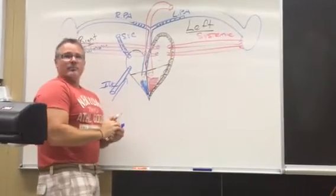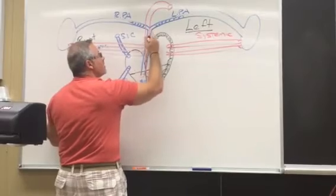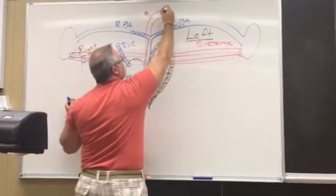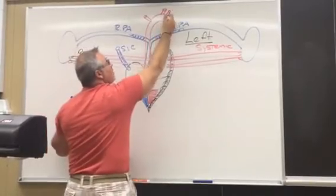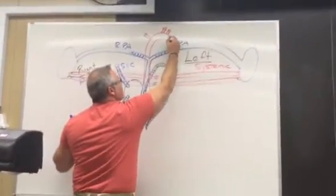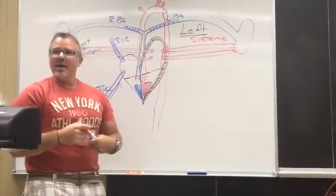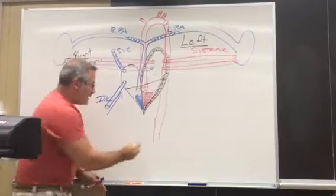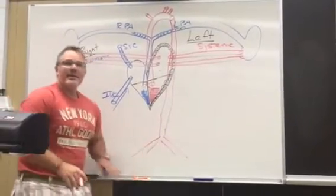With the aortic semilunar valve open, oxygenated blood is forced into the aorta. At the arch of the aorta, the brachiocephalic branches to the right, and the left common carotid and left subclavian shoot off to the left — delivering oxygenated blood to the brain and upper extremities. The aorta continues through the thoracic region into the abdominal aorta, where branches supply all the abdominal organs.